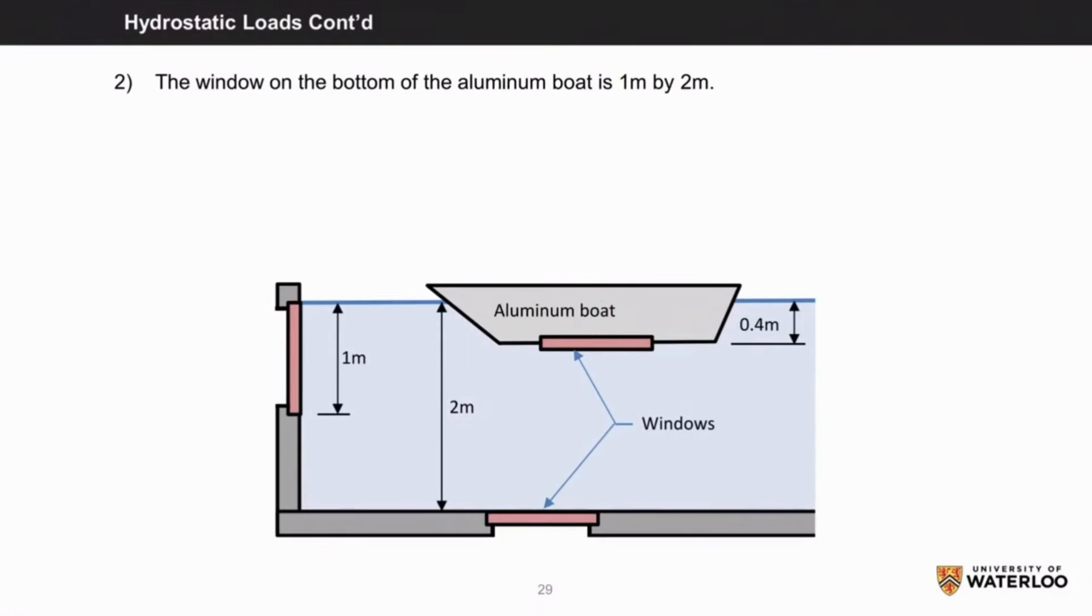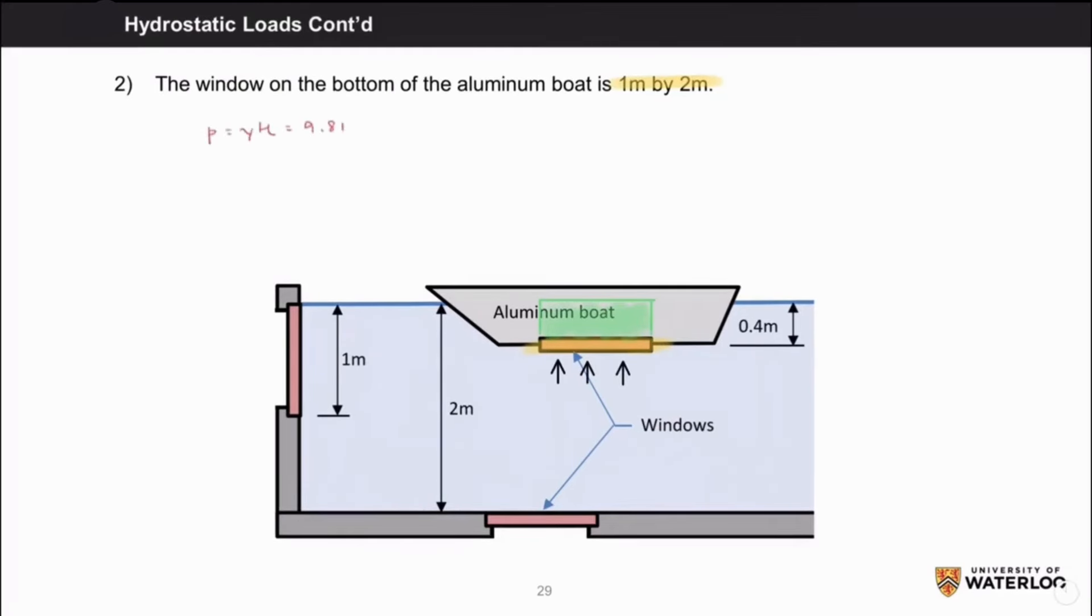Next, we will take a look at the window at the bottom of the aluminum boat, which is 1 meter by 2 meters. We can apply the same equations as last time to solve for pressure and the total force. This gives us a pressure of 3.9 kilopascals and a force of 7.8 kilonewtons.